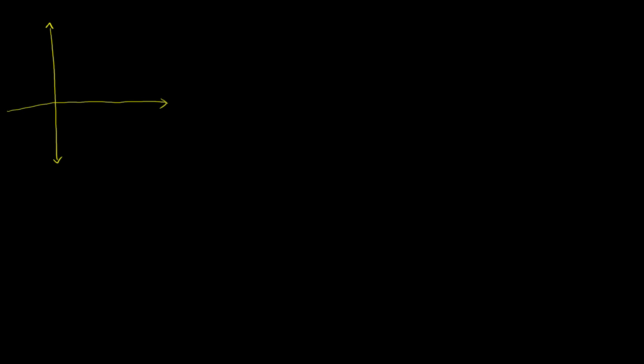Let's say I have a line that goes through the origin. I'll draw it in R2, but this can be extended to an arbitrary Rn. Let me draw my axes. Those are my axes right there — not perfectly drawn, but I think you get the idea. Let me draw a line that goes through the origin here. So that is my line there.